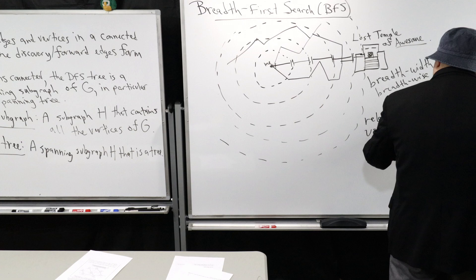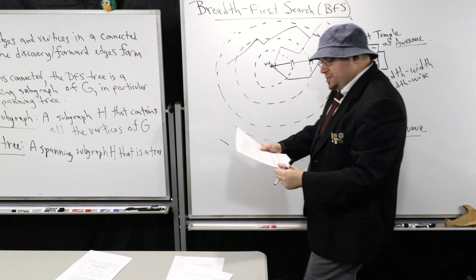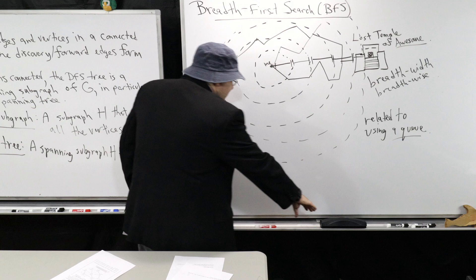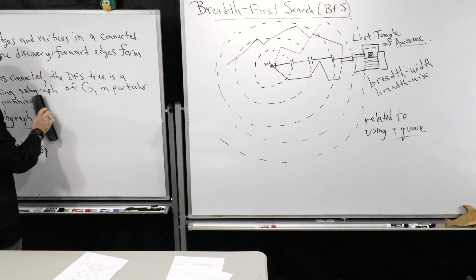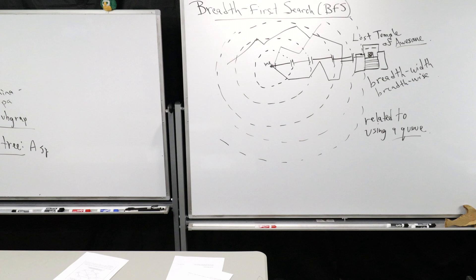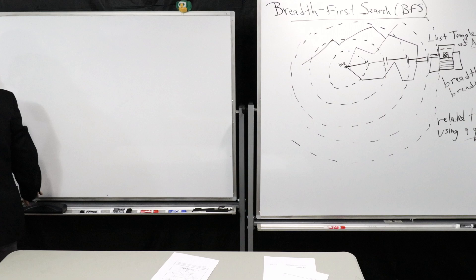We're going to use a queue for our breadth-first search. Because I have two more minutes, I'm going to give you the pseudocode for breadth-first search. Then next time we come back, we'll do an example and summarize some neat things about BFS. If you don't have time to write down the pseudocode, that's okay — we'll come back to it next time. Just make sure you come early because I'm going to talk about some things the BFS tree is capable of doing.